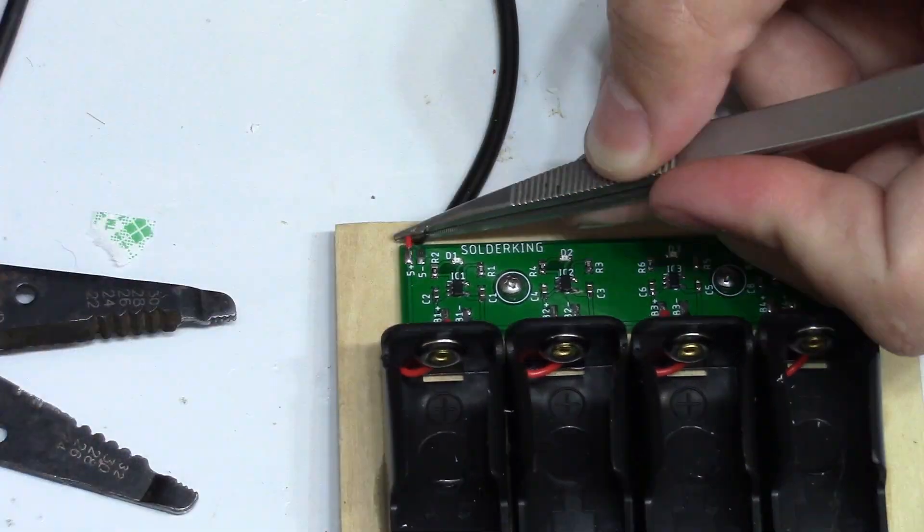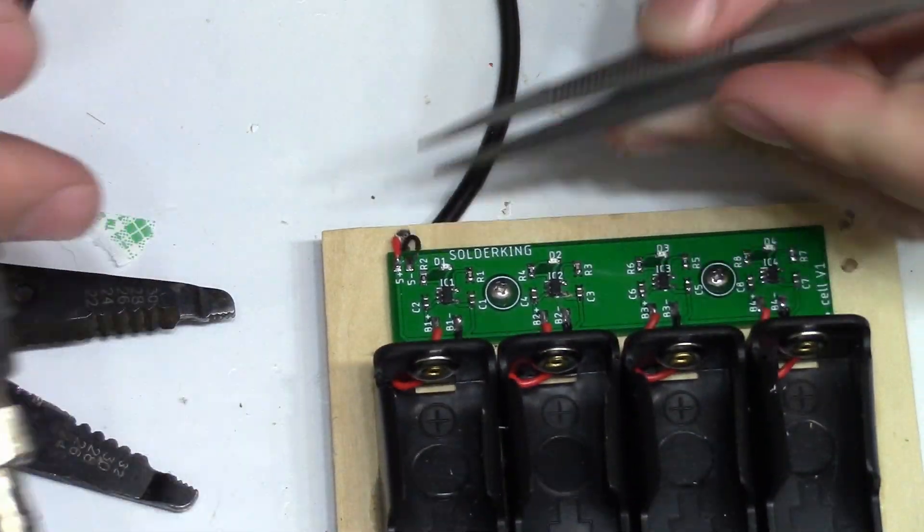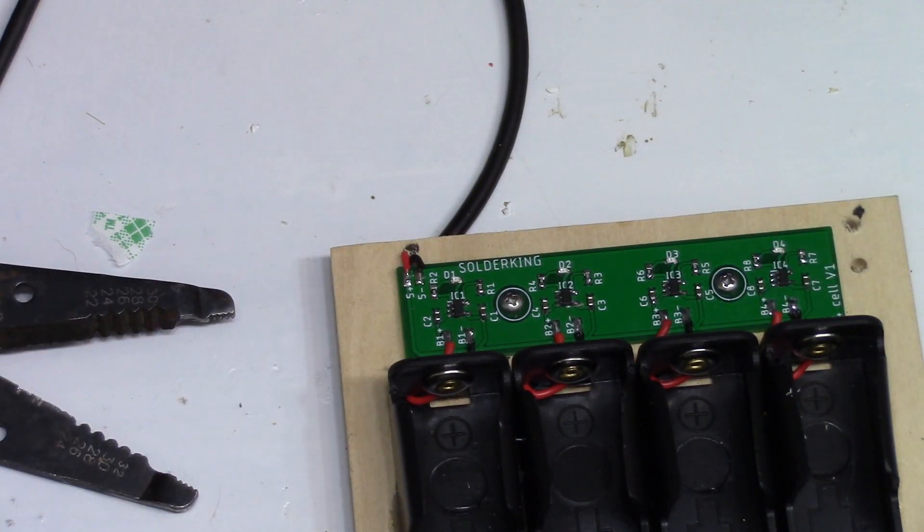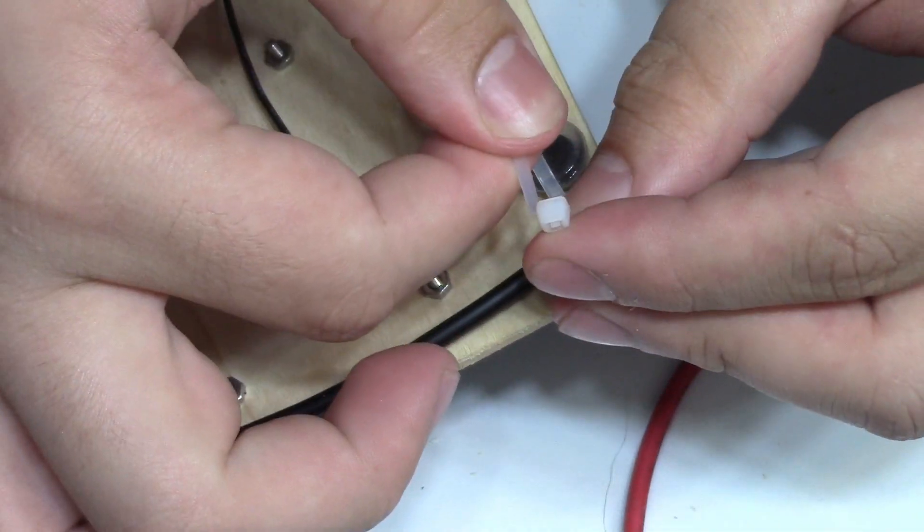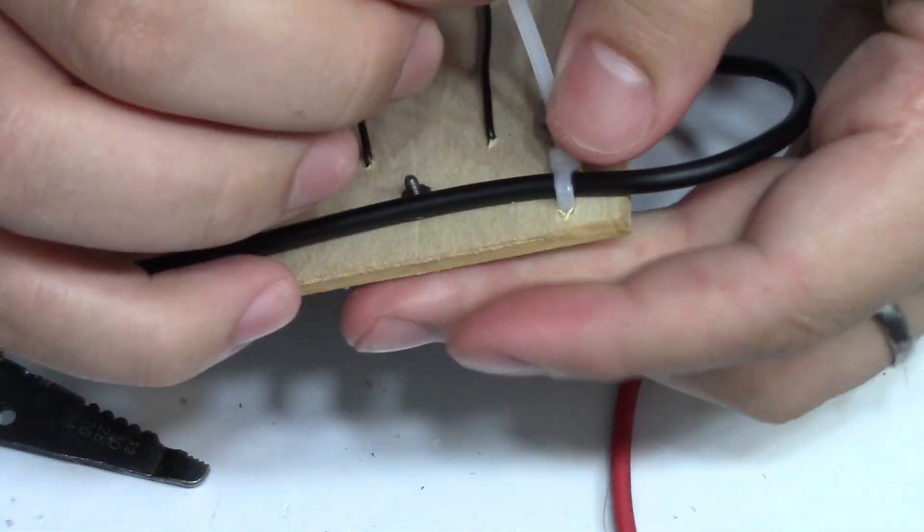Since the voltage and current requirements fall within that of a decent USB charger I decided to use a scrap USB cable as a power cable. This will then plug into a 2.4 amp USB charger. This circuit can charge a cell at 500 milliamps so this should be enough to charge all 4 cells at once if each cell uses 500 milliamps.